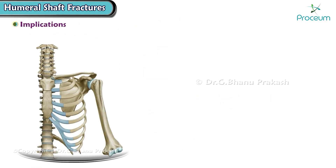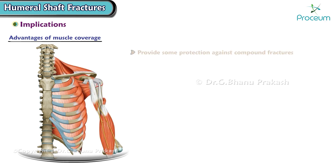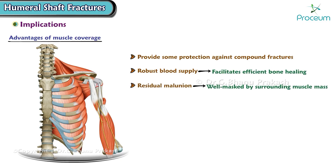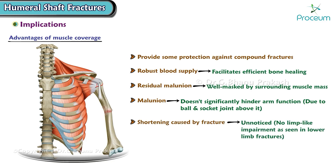The muscles surrounding the humeral shaft provide some protection against compound fractures, and the robust blood supply from these muscles facilitates efficient bone healing. Any residual malunion is often well masked by the surrounding muscle mass. Malunion in this area doesn't significantly hinder arm function due to the ball-and-socket joint above it, and any shortening caused by the fracture usually goes unnoticed, as there is no limp-like impairment as seen in lower limb fractures.